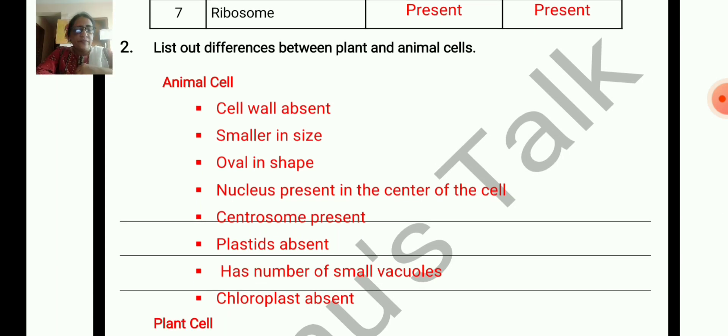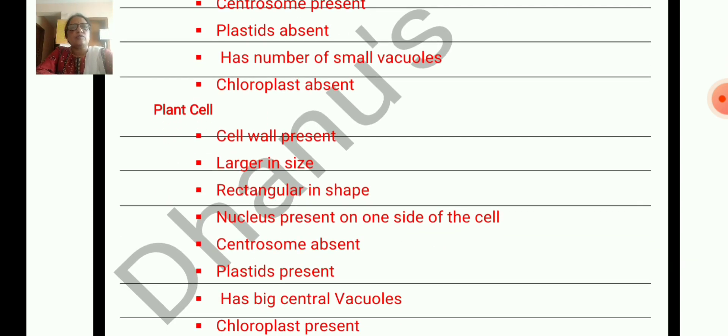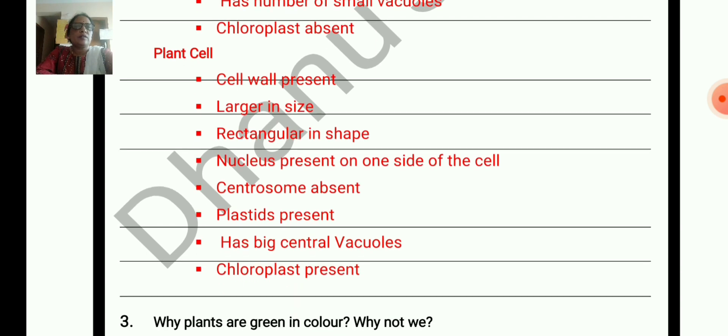List out differences between plants and animal cell. You can write 4 or 5. Animal cell: cell wall absent, smaller in size, oval in shape, nucleus present in center of cell, centriole present, plastids absent, number of small vacuoles, chloroplast absent. Plant cell: cell wall present, large in size, rectangular in shape, nucleus present on one side of cell, centriole absent, plastids present, big central vacuoles, chloroplast present.